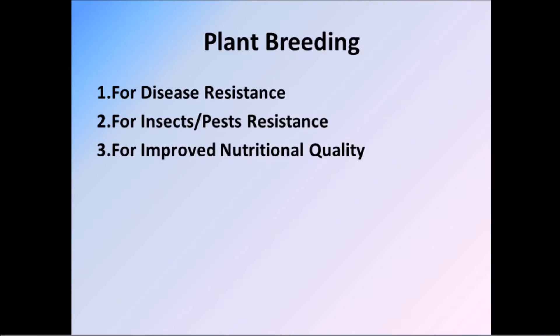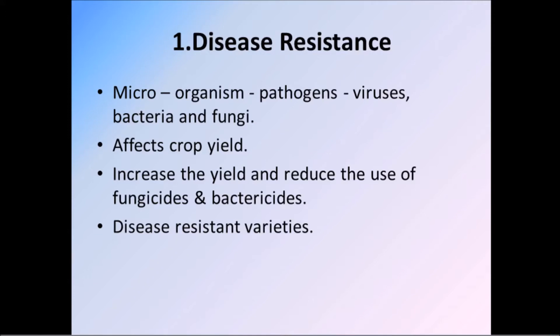Plant breeding is necessarily required for disease resistance, insect or pest resistance, and improved nutritional quality. For disease resistance: there are many microorganisms or pathogens like viruses, bacteria, and fungi that cause plant diseases, which affect crop yield. Hence it is important to develop disease-resistant varieties of crops — this would increase yield and reduce the use of fungicides and bactericides.